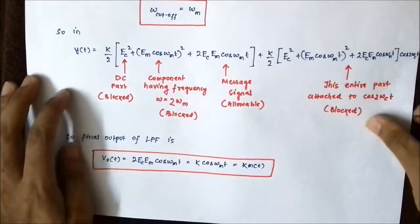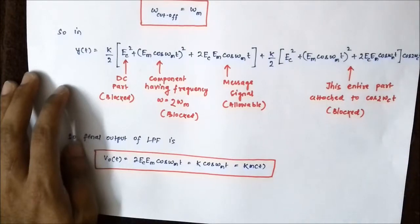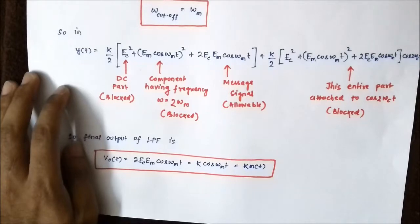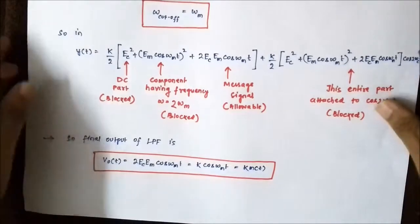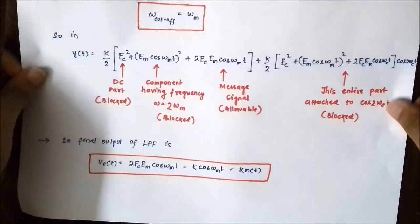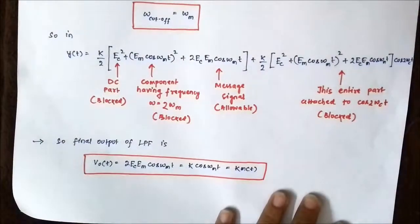This is the demodulation of a double sideband full carrier signal using the square law demodulator method. In my upcoming video, I'll be discussing about the envelope detector method. If you don't understand any portion, please pause the video and note down the things. Please subscribe to Engineering Tutorial for more videos related to electrical, electronics, instrumentation, and communication engineering. Have a great day, thank you very much.